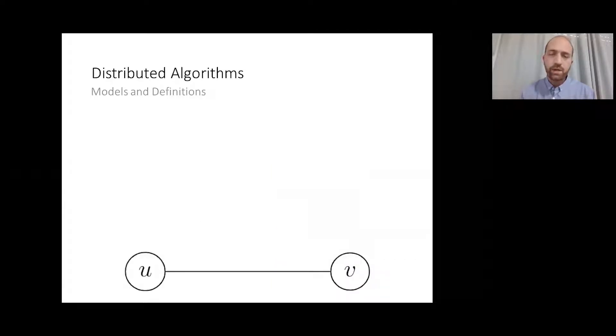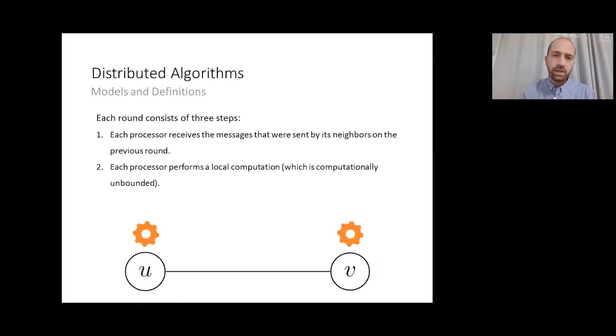The computation of processing local model consists of three-step rounds. On the first step, each vertex receives messages sent by its neighbors on the previous round. On the second step, each vertex performs a local computation, which is computationally unbounded, as we assume that the communication is much more time consuming than the local processing in this model. On the third step of each round, the node may send a message to any of its neighbors.